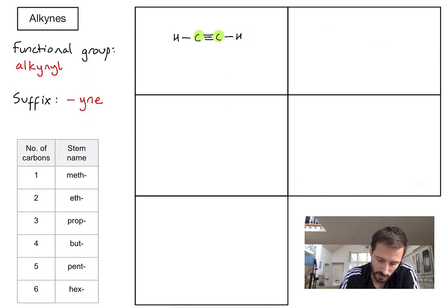So I can write down eth. And because it's an alkyne I know it's going to end with yne, y-n-e. So that molecule is ethyne.